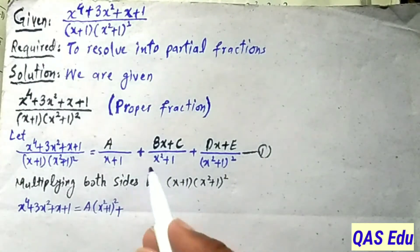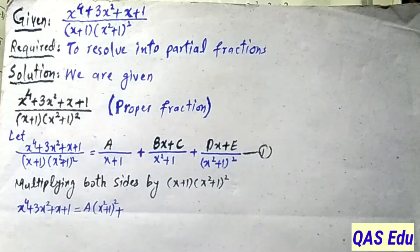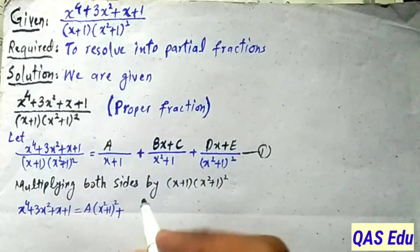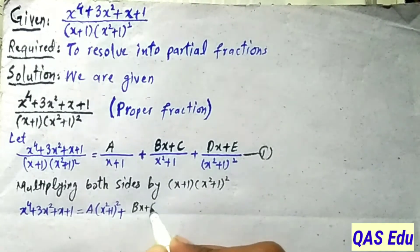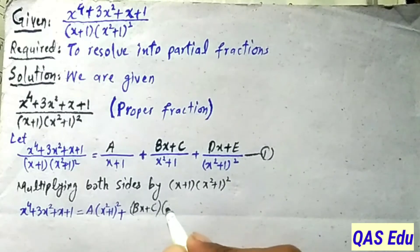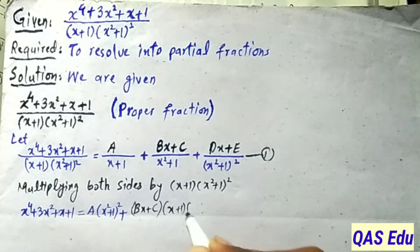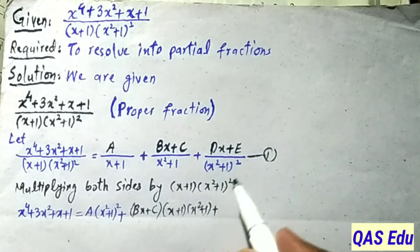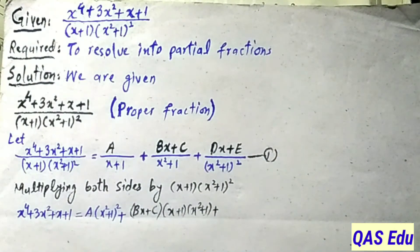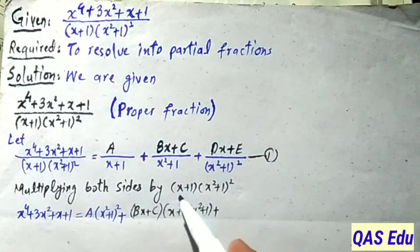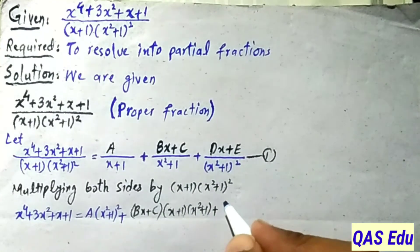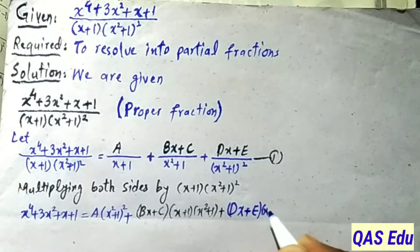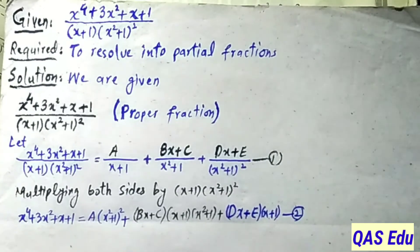Expanding: over (x² + 1), multiply by (x² + 1) cancels one factor, leaving Bx + C times (x + 1). For Dx + E over (x² + 1)², multiplying cancels both quadratic factors, leaving (Dx + E)(x + 1). This is equation number 2.